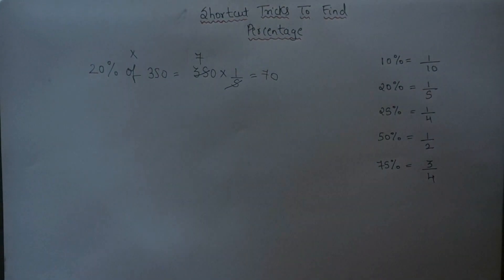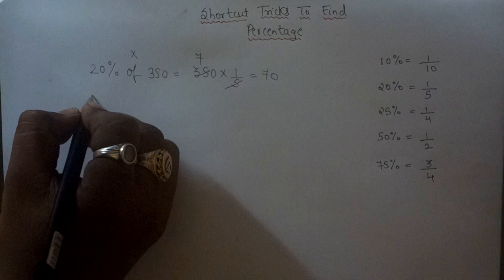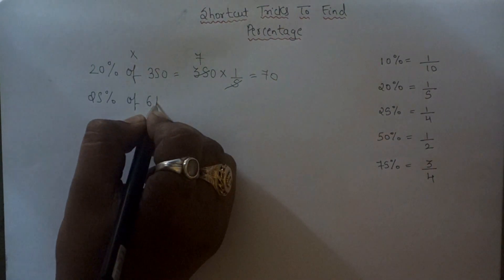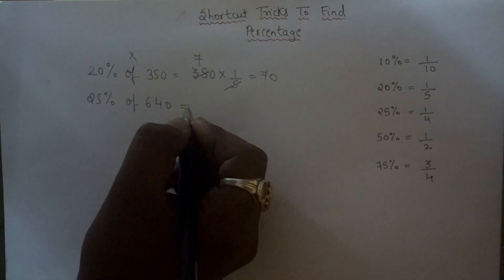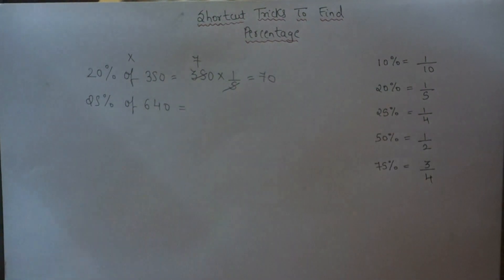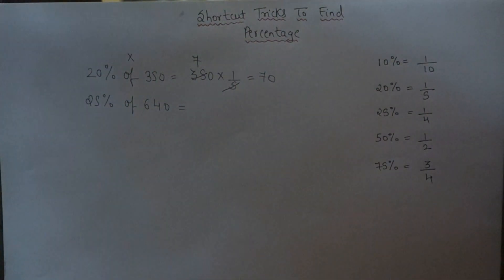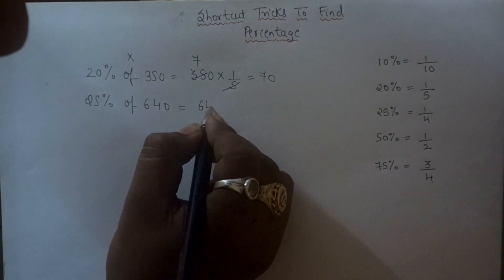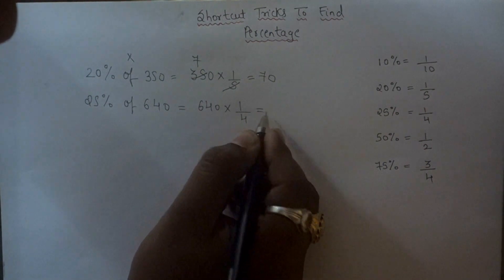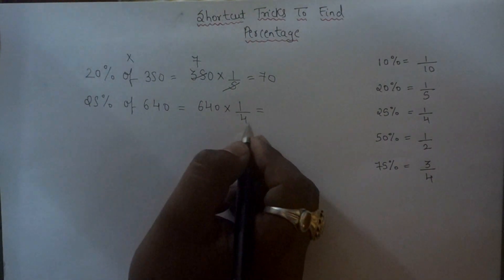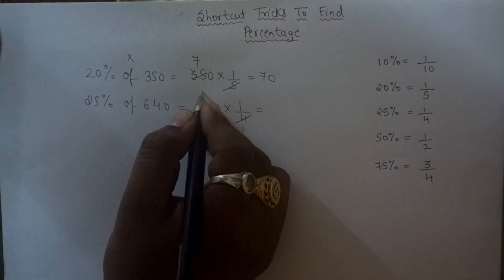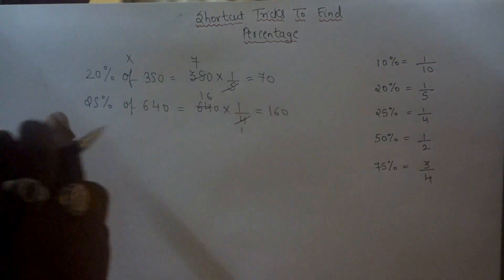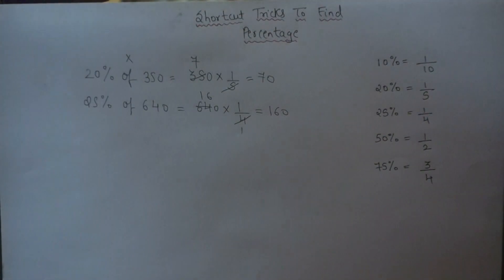Let's take one more example: 25% of 640. Since 25% can be written as 1 upon 4, whenever you have to find 25% of any number simply multiply that number by 1 upon 4. Cancel out and you get 4 ones are 4, 16 are 64 — the answer is 160. So 25% of 640 is 160.